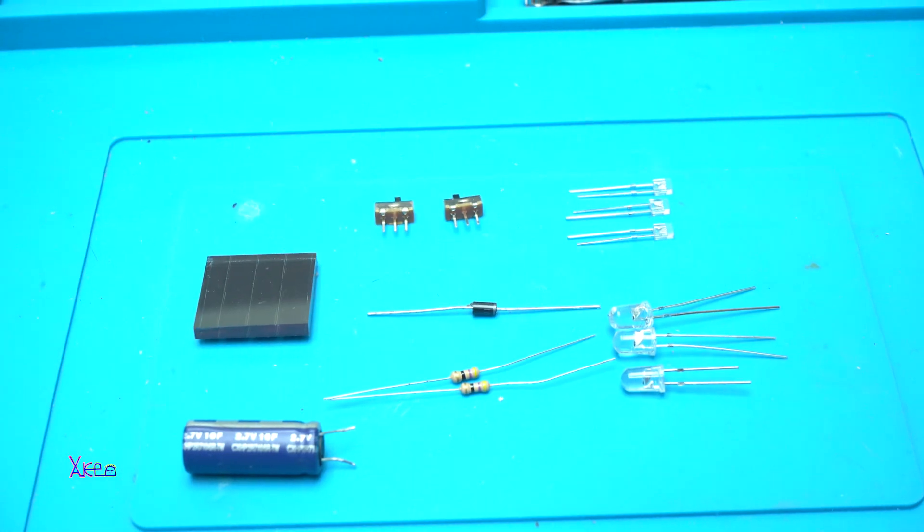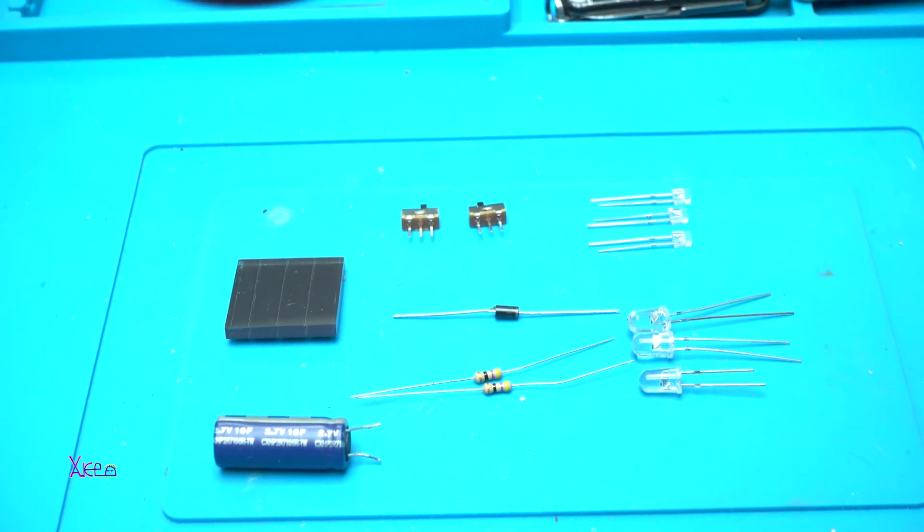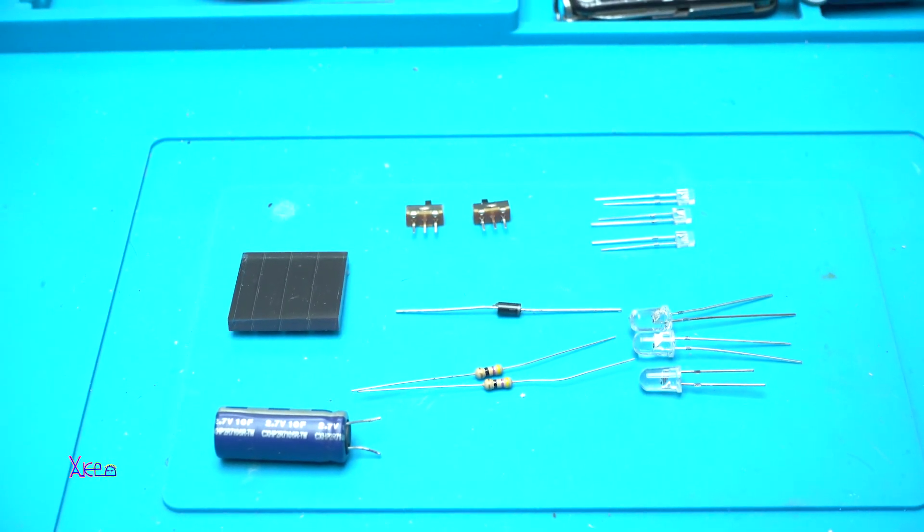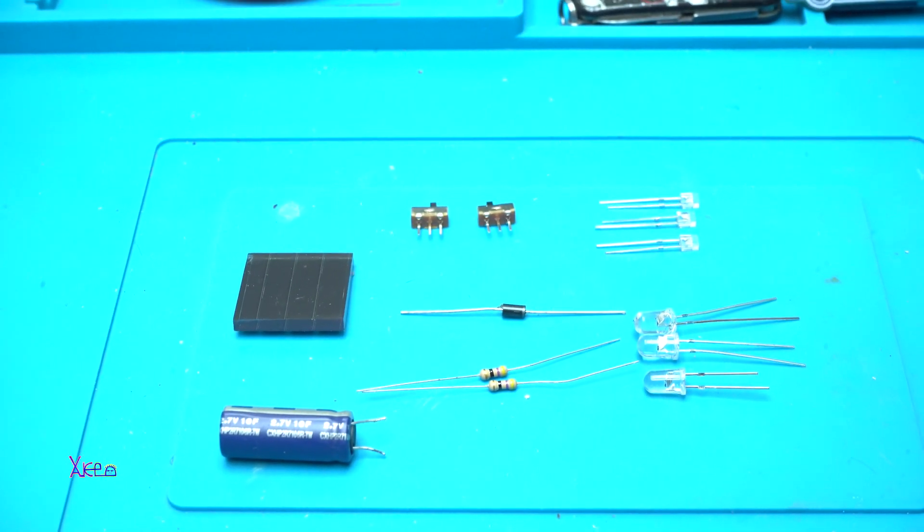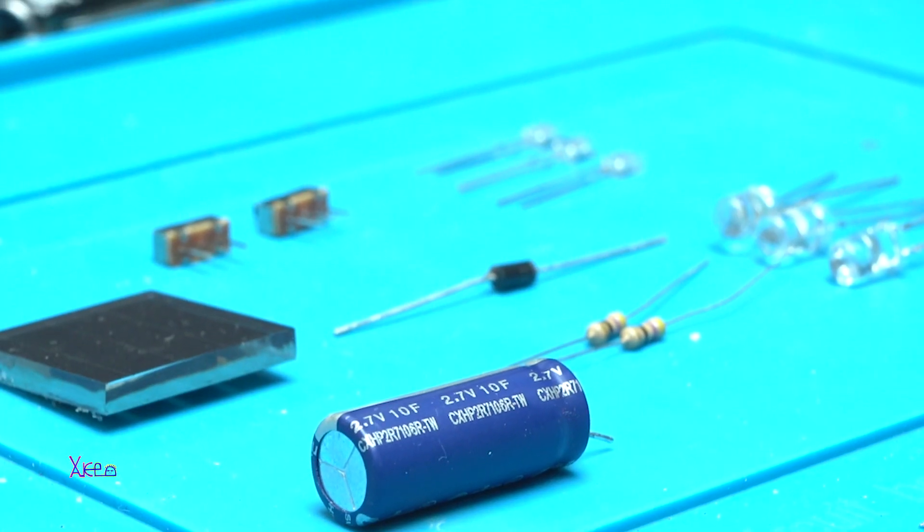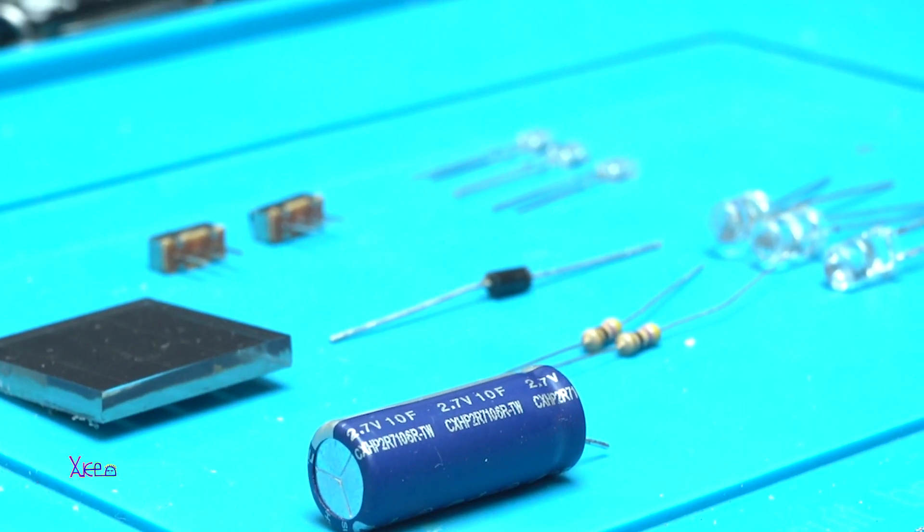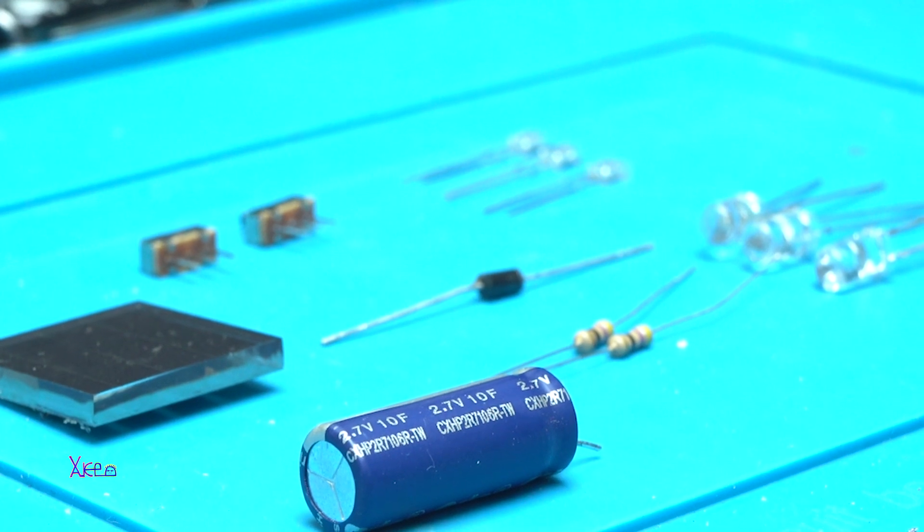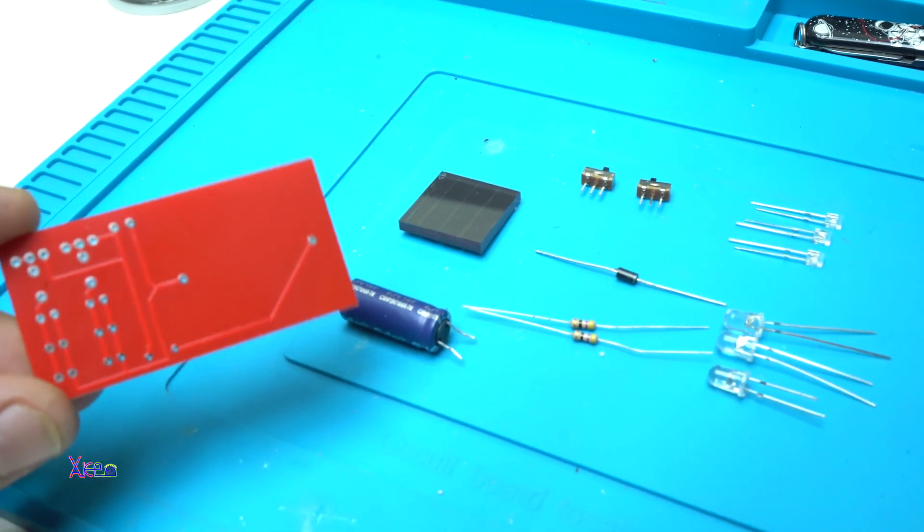Ok for making the emergency light I need a small solar panel that gives 5 volts, a supercapacitor 2.7 volts and 10 farads. I got these 10 pieces from eBay for around 20 dollars I think.